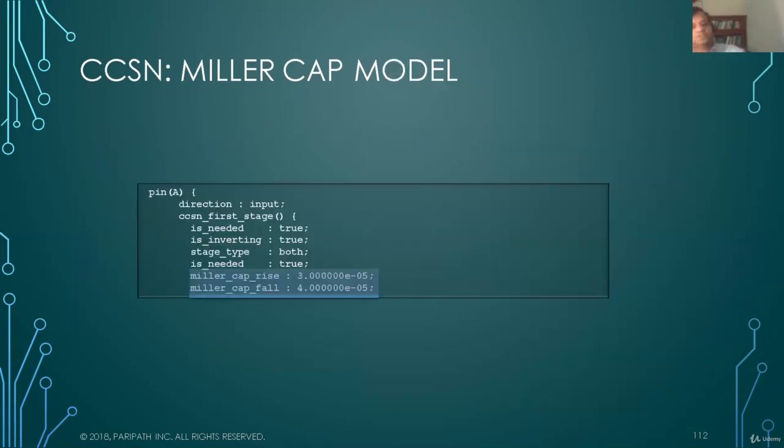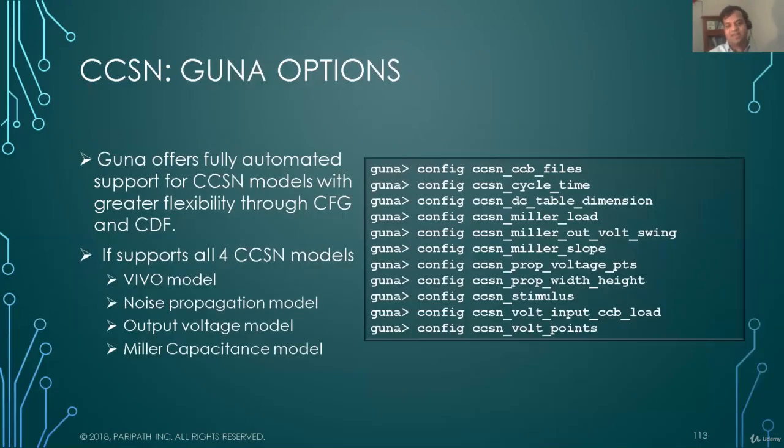And how does it show up in the Liberty? And Liberty shows somewhat like this. Direction is input. CC in the first stage. And you have two simple statements. Miller cap rise and Miller cap fall for every pin. And that's what your Miller cap is.